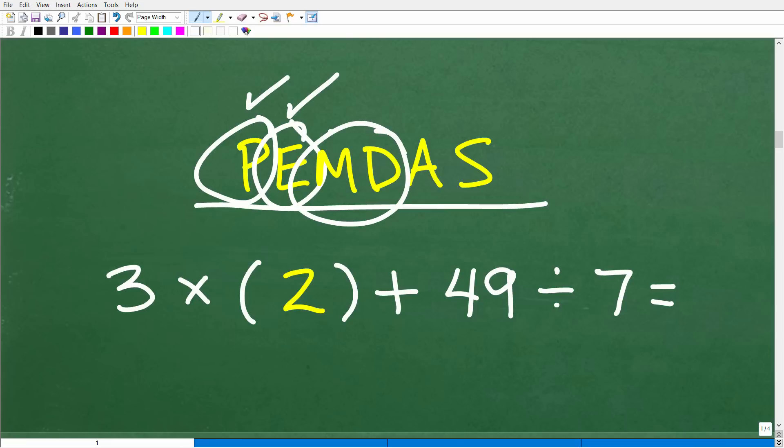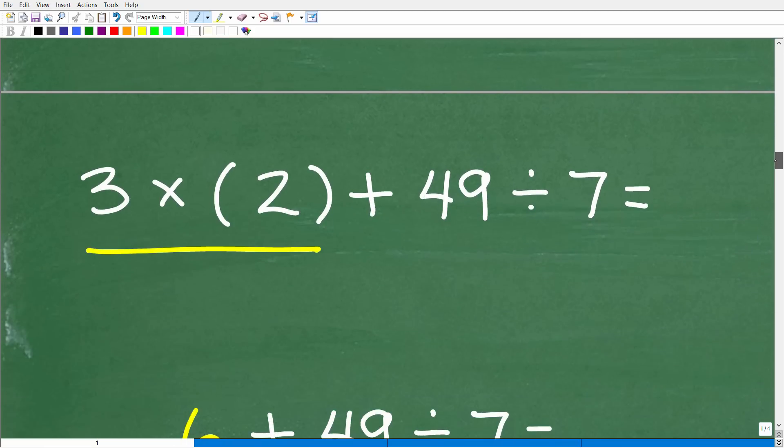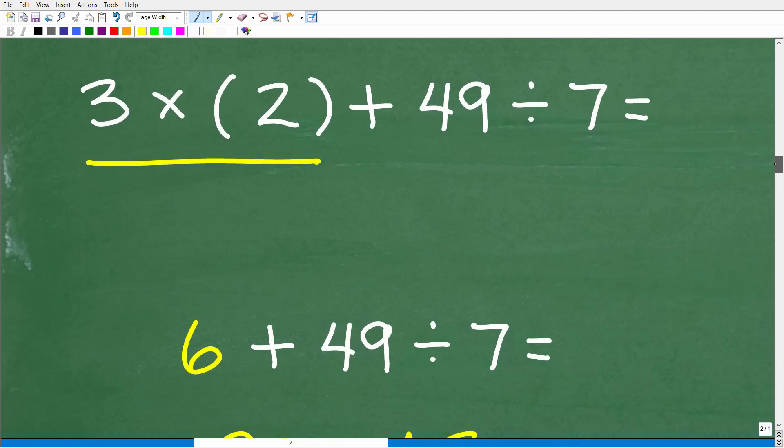Okay, so what do you think we should do right now? Well, we're going to do whatever we see first from left to right. So that would be multiplication. Now, technically, you could do both steps, and this wouldn't harm the actual correct answer. But let's just go ahead and follow PEMDAS strictly. So the next step here is to do the multiplication first, because that's what we see from left to right. All right, so 3 times 2 is 6. So now we have 6 plus 49 divided by 7.